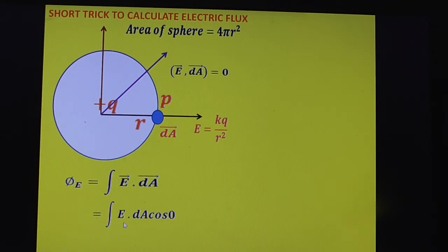So E is a constant here. Therefore you can write it as E into integral dA. What is integral dA? That is A. Therefore phi E electric flux is equal E A.